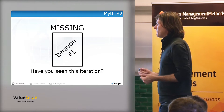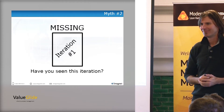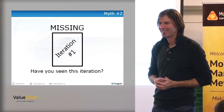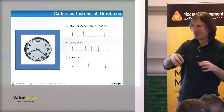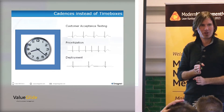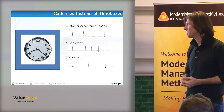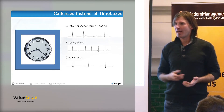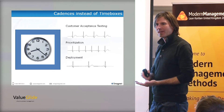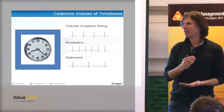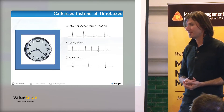Myth number two: the Kanban method is iterationless. What is an iteration? It's a time box. We fill it up with stuff we think we can get done, and tag some rituals at certain points. Kanban can do that. If we think about these things as cadences and I want to do something every two weeks, that would be an iteration. If I lined up customer acceptance, deployment, and a retrospective every two weeks, I would have an iteration — except I'd call it a cadence.